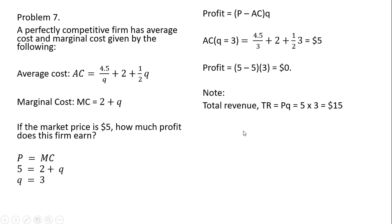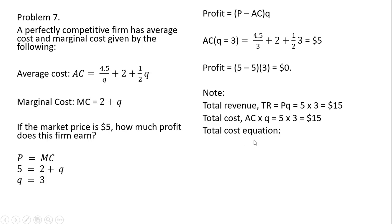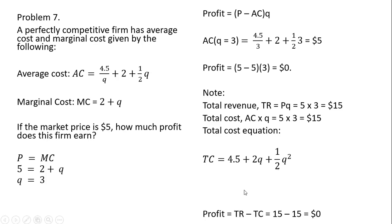Another way to back into profit: total revenue is $5 times 3 units equals $15. Total cost is average cost times quantity: $5 times 3 equals $15. We can also back into the total cost equation by multiplying the average cost equation through by Q, and plugging in 3 units confirms total cost is $15. So profit is total revenue minus total cost: $15 minus $15 equals $0. That's all the problems — I hope you found this video helpful.